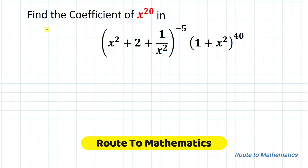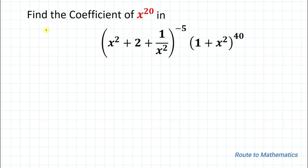Hello everyone, welcome to Root 2 Mathematics. In this video we are going to solve an interesting question. The given question is: find the coefficient of x to the power 20 in (x² + 2 + 1/x²) to the power −5, multiplied with (1 + x²) to the power 40. So we are asked to find the coefficient of x^20 from this expression. Without any delay, let's start the solution.